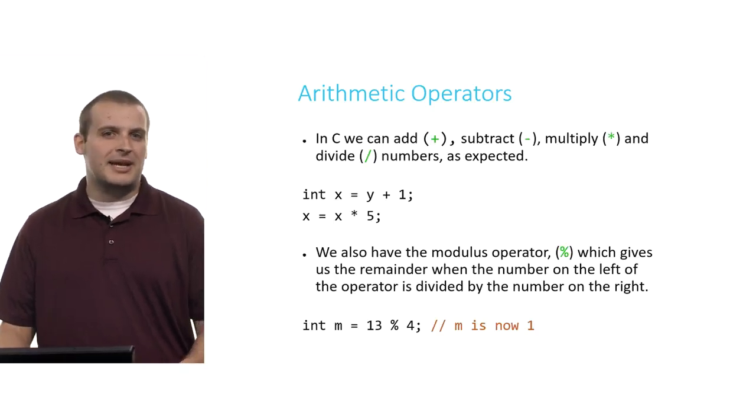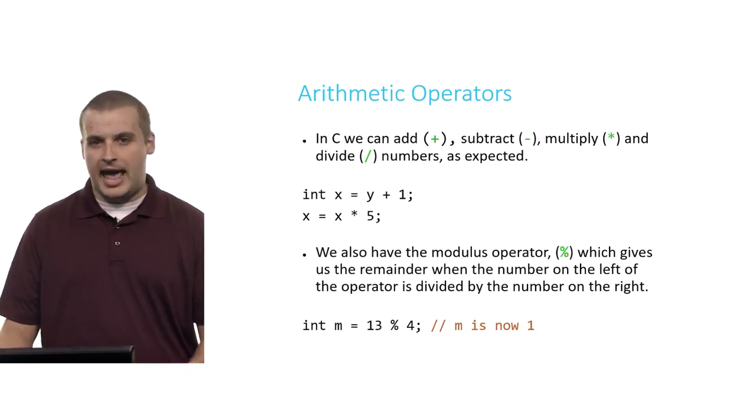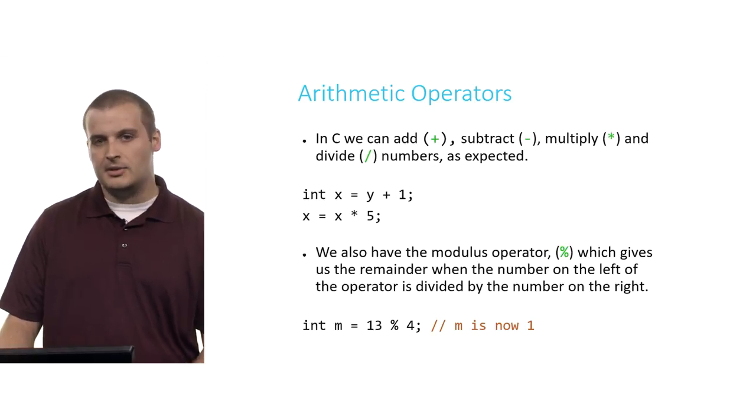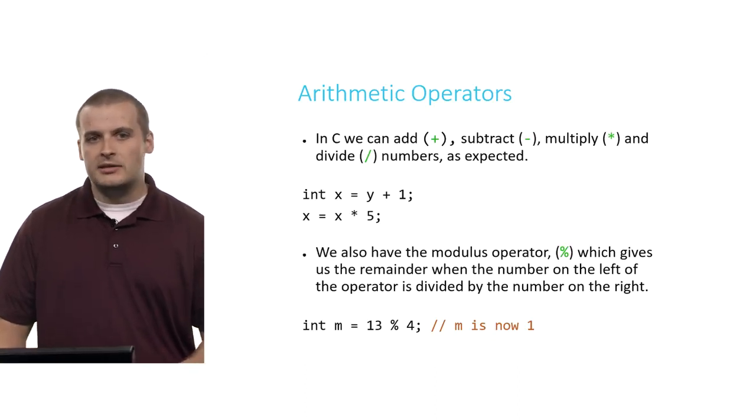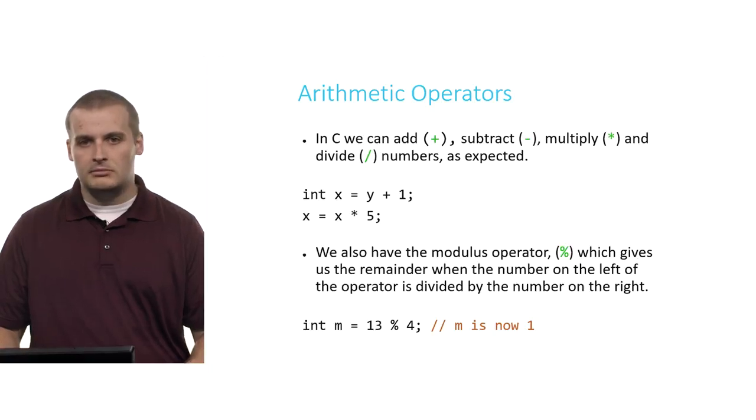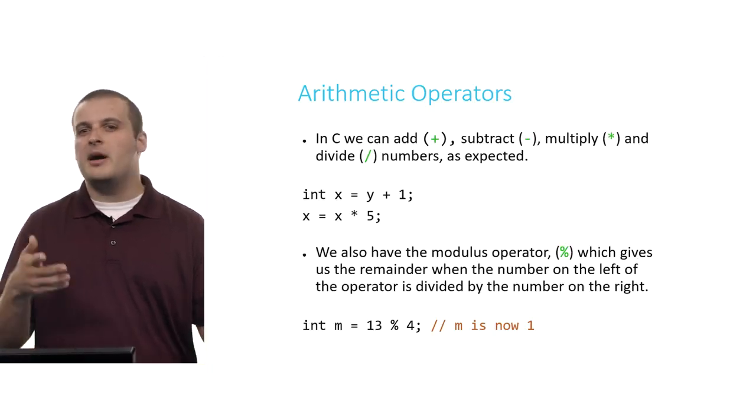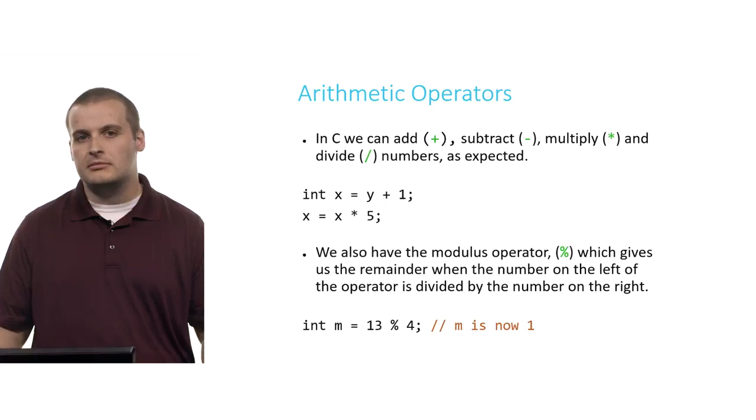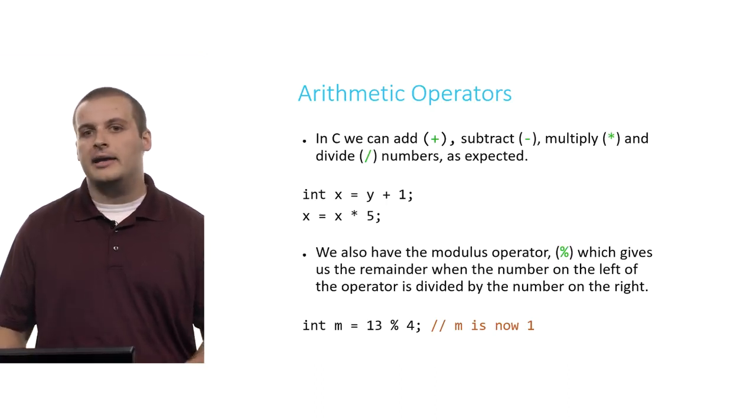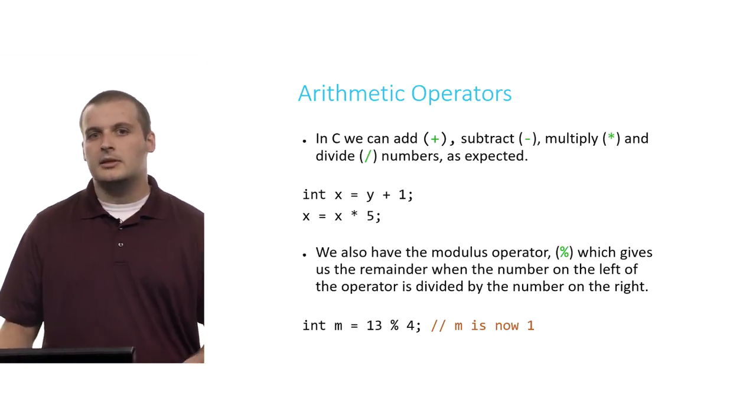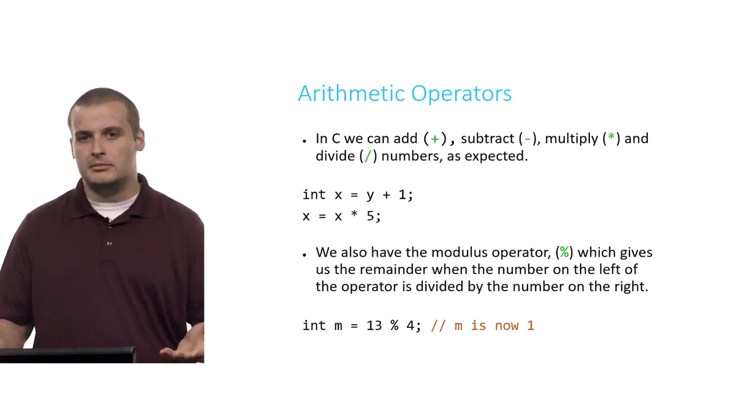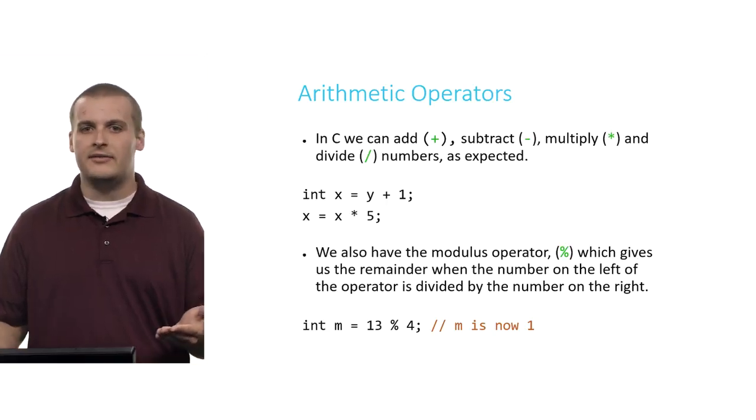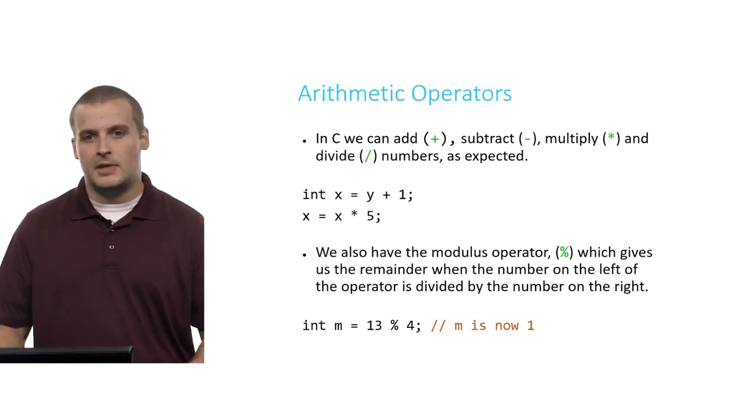As you might expect, we can do pretty basic math operations in C. We can add, subtract, multiply, and divide numbers using plus, minus, star, and slash, respectively. Here's a couple of lines of code in which we do that. So we have int x equals y plus 1. Let's assume that somewhere up above this line of code, we had said int y equals 10. What's the value of x after I execute this first line of code? Did you say 11? You'd be right.